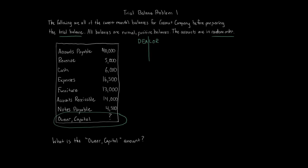Accounts payable is a liability — all payables are liabilities. Revenue is of course a revenue account, which can include sales revenue, interest revenue, and other types. Cash is an asset — assets are current or future resources or benefits. Expenses are expense accounts; almost all have the word 'expense' in them, though cost of goods sold is an exception. Furniture is an asset. Accounts receivable — all receivables are assets. Notes payable is a liability. Owner's capital is the owner's equity account, indicating a sole proprietorship or partnership.